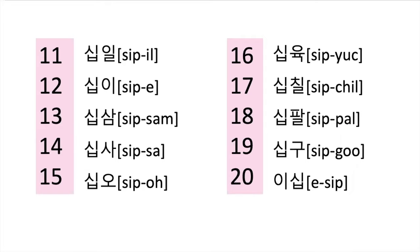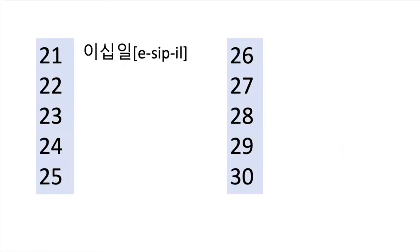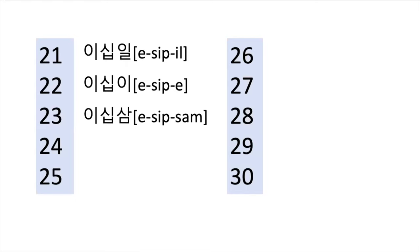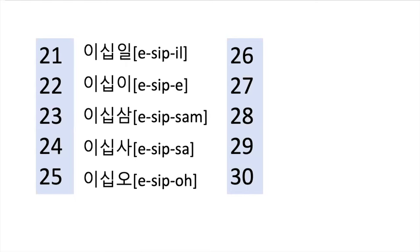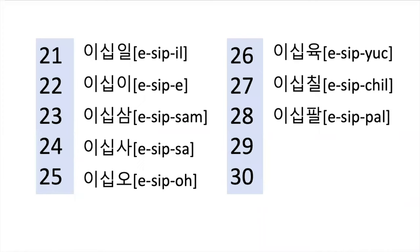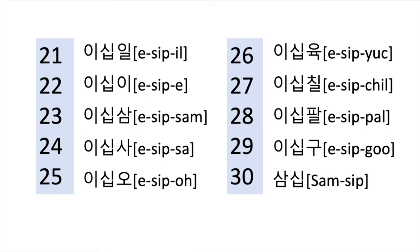Then we're going to go for 21. 20 and then you're going to say one. So 21, 22, 23, 24, 25, 26, 27, 28, 29, 30.